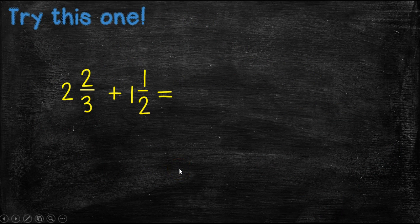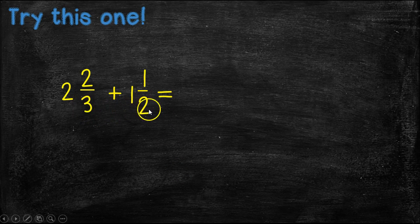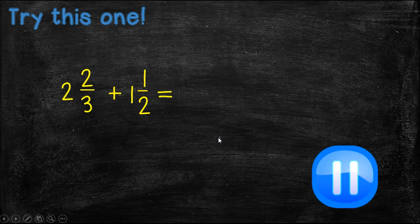Go ahead and try this one on your own. 2 and 2/3 plus 1 and 1/2. Remember, we need to find an equivalent fraction. So you have to find something that the two denominators have in common, the least common denominator, change your numerators, and then add everything up. Go ahead and pause the video, work on this problem, and come back and see if your answer matches mine. Coming back in five, four, three, two, one.